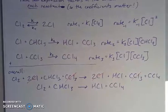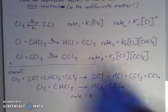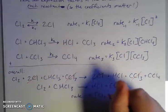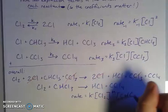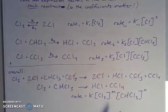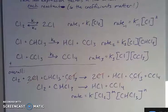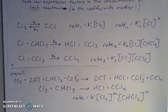Now the rate of this process — since it's not an elementary process — my rate law expression is going to be equal to some constant k times the concentration of chlorine raised to some power times my concentration of CHCl₃ raised to some power. I wouldn't know what these powers are without more experimental data, or information about the rates along the way.